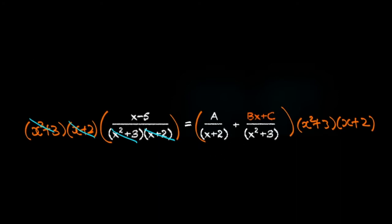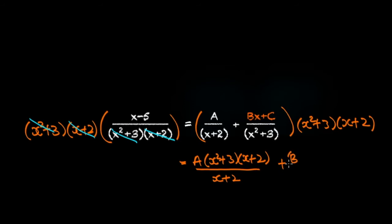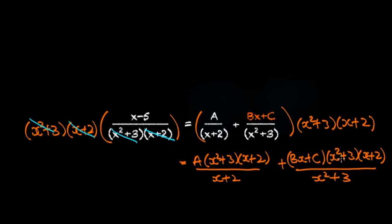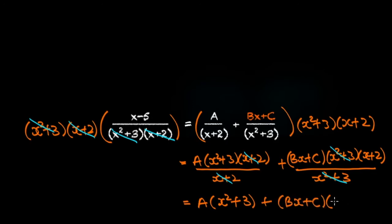So on the right hand side, let's expand the brackets. We have a times x squared plus three times x plus two, all over x plus two. And then we have bx plus c times x squared plus three times x plus two, divided by x squared plus three. The x plus two cancels, and the x squared plus three cancels, leaving us with a times x squared plus three, plus bx plus c multiplied by x plus two. And both of these are equal to x minus five.